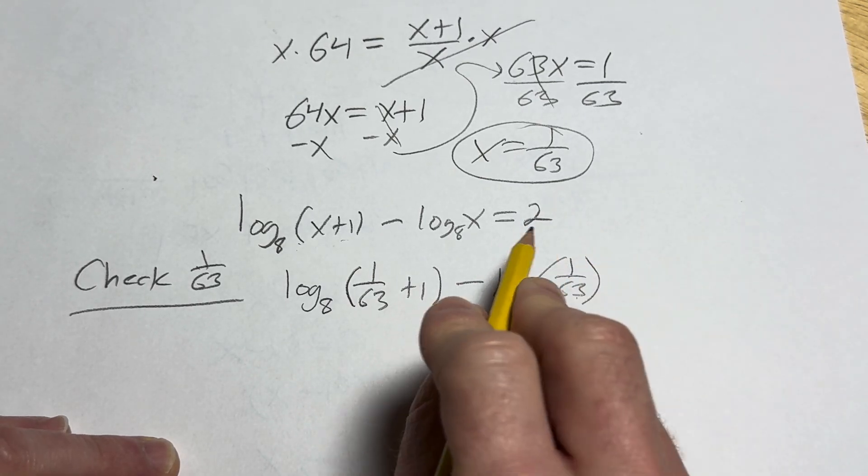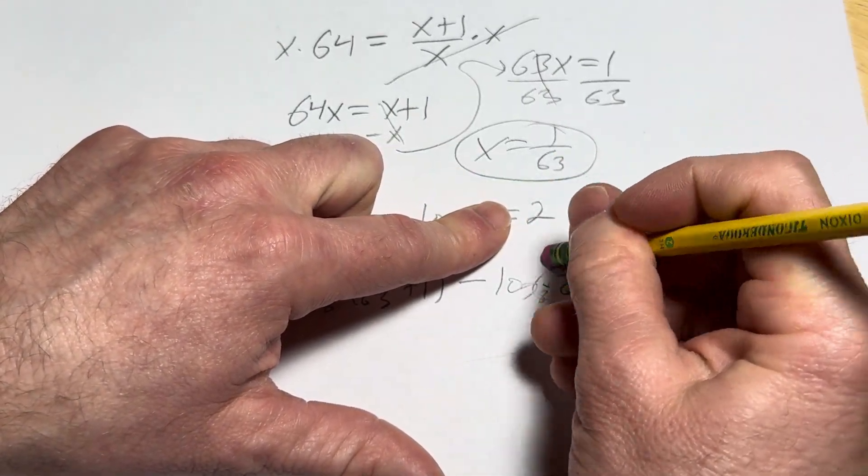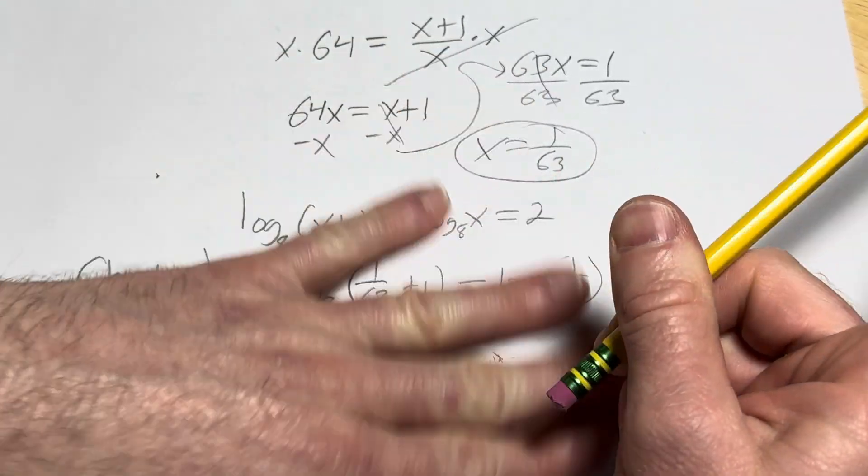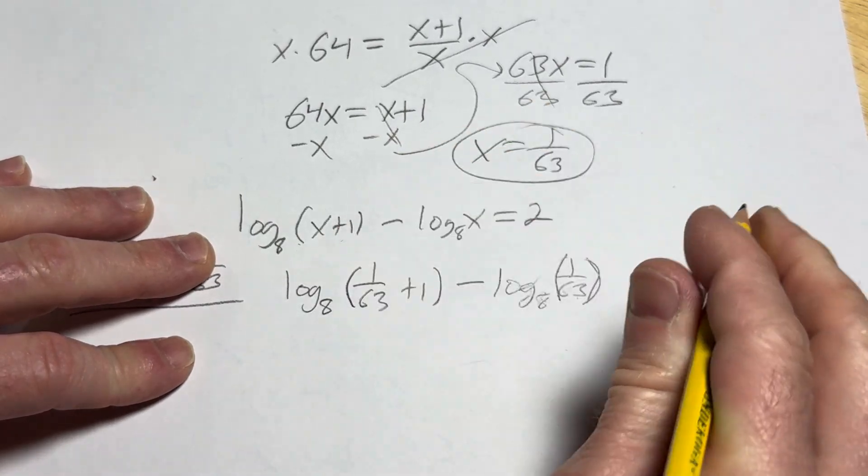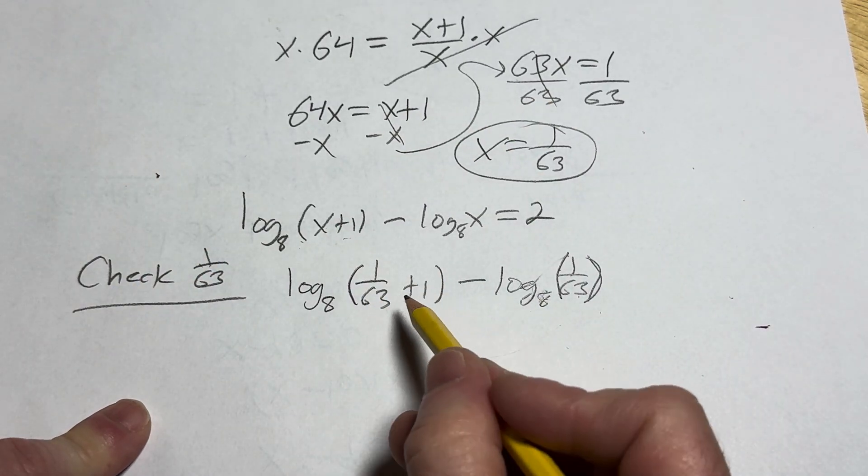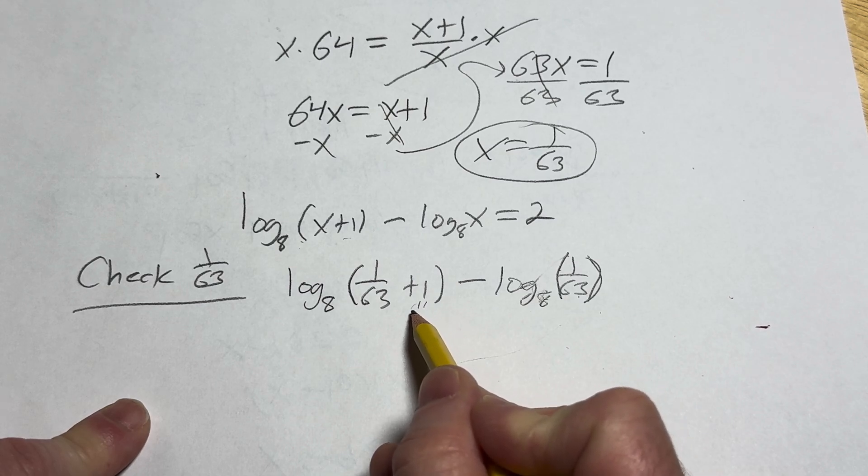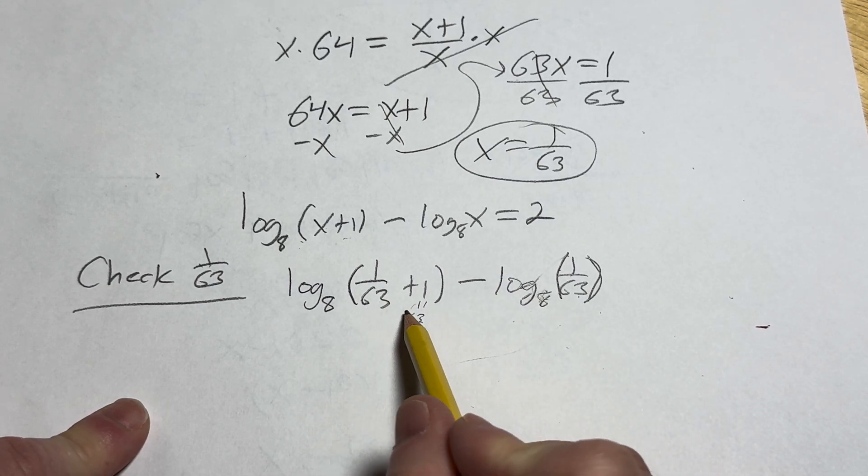And then we don't know if that's equal to 2. We have to show that, right? We're going to mess up there. All right. So adding these, think of 1 as 63 over 63. And the reason we do that is because we want a common denominator to add these.